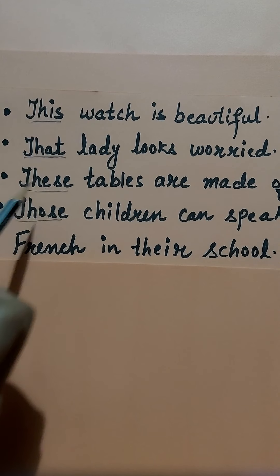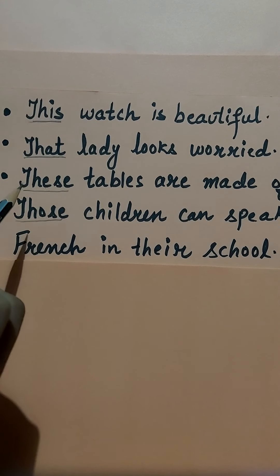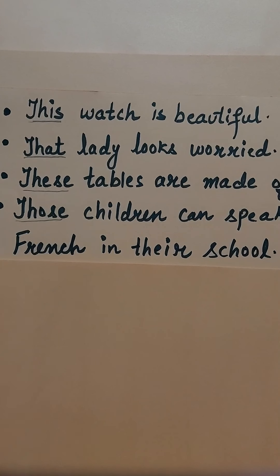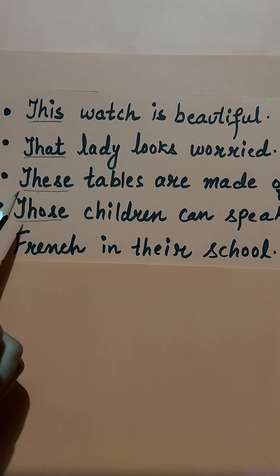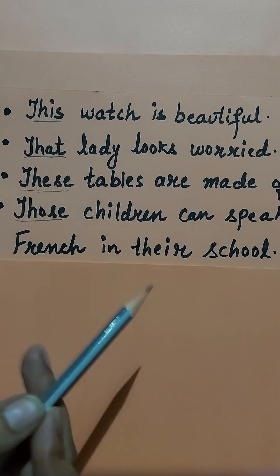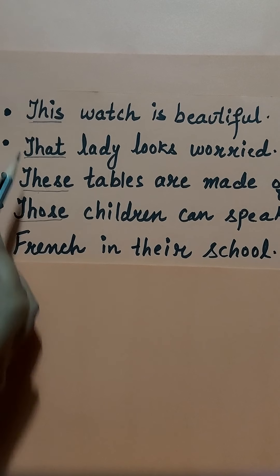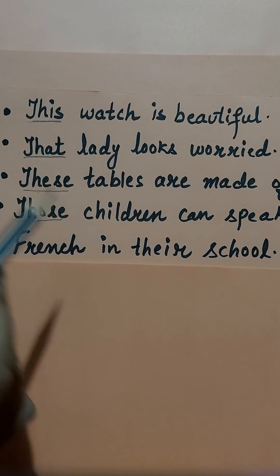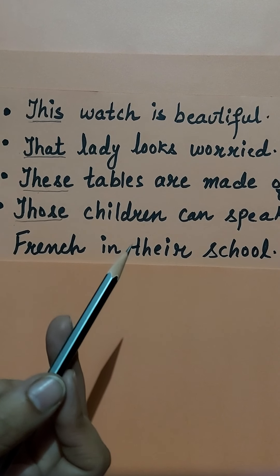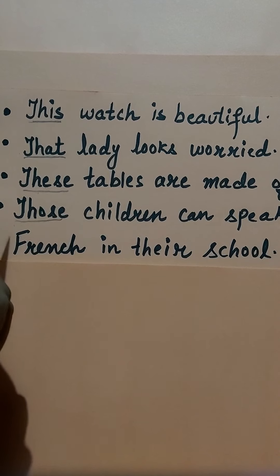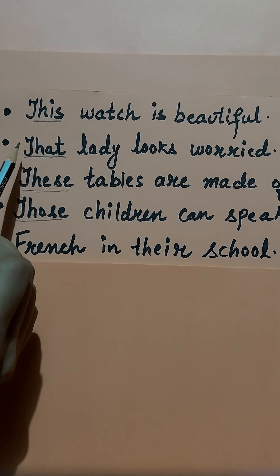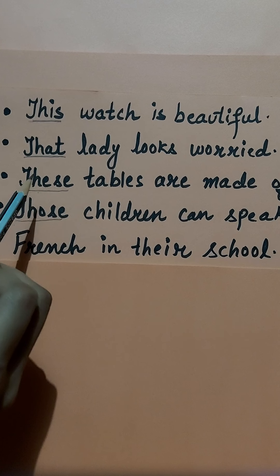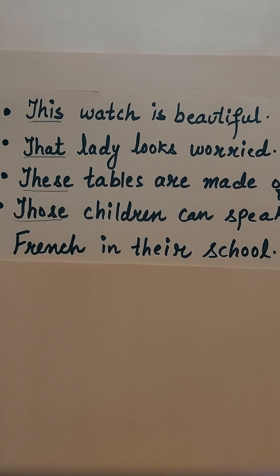This, that, these, and those are the four most commonly used demonstrative adjectives. 'This' and 'these' are used to point out persons or things that are near, and 'that' and 'those' are used to point out persons or things that are far from us. Also, 'this' and 'that' are used with singular nouns, and 'these' and 'those' are used with plural nouns. You have to remember this.